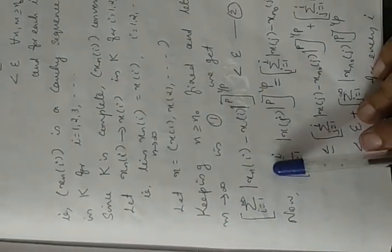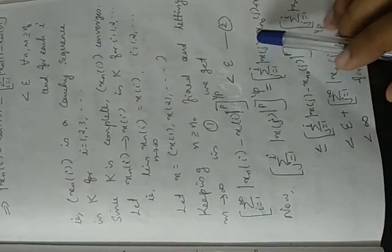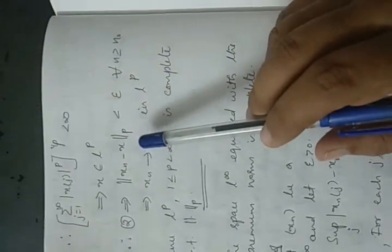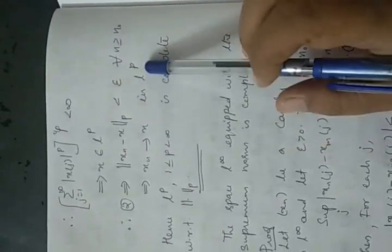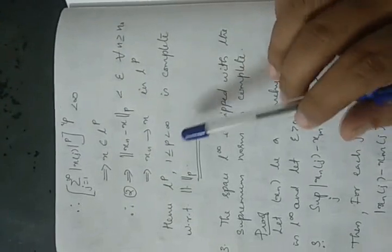From the earlier inequality, (Σ_{i=1}^∞ |Xn(i) − X(i)|^p)^{1/p} is less than ε, and we proved that X belongs to Lp. This term is nothing but the p-norm of Xn minus X, so we have the p-norm of Xn minus X is less than ε for every N ≥ N₀. Then Xn converges to X in Lp. So if Xn is a Cauchy sequence in Lp, then Xn converges to X belonging to Lp. By definition, Lp is complete for 1 ≤ p < ∞ with respect to the p-norm.